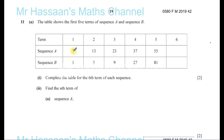From 7 to 13 you've got to add 6. And from 13 to 23 you've got to add 10. So it's not a linear sequence because you're not adding the same amount each time — it's definitely not linear. And from 23 to 37 you've got to add 14. And from 37 to 55 that's 18 — so it's 10 plus 8, which is 18.